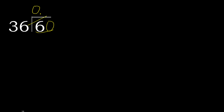36 multiplied by which number is nearest to 60 but not greater? 36 multiplied by 2 is 72, which is greater. 36 multiplied by 1 is 36. Subtract — remainder is 24.